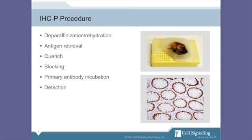The IHC procedure is broken down into six steps: deparaffinization and rehydration, antigen retrieval, quenching, blocking, primary antibody incubation, and detection. We have seen over the years that variations in a number of these steps can have an impact on the performance of an antibody and therefore the staining results.